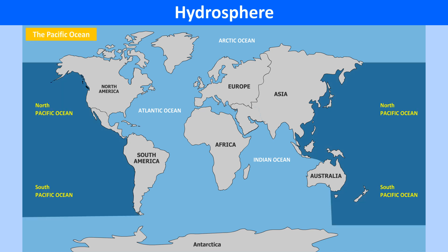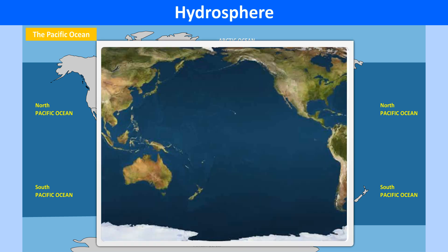The Pacific Ocean is the largest ocean in the world. It covers one-third of the Earth's surface. Its area is larger than the entire landmass of the Earth. It has double the volume of water than that of the Atlantic. The average depth is about 4,267 meters.